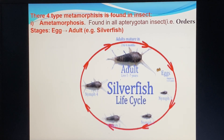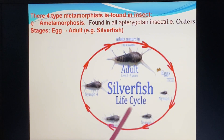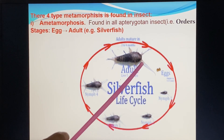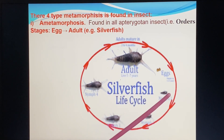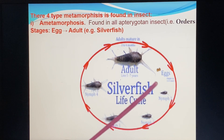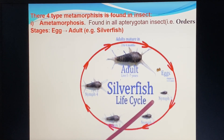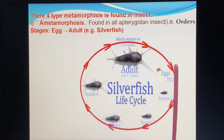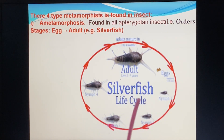In no metamorphosis, the attributes of the insect are similar to the adult. The nymph is similar to the adult — the nymph is small, and the adult is large.